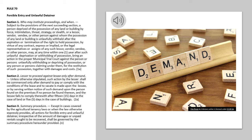Section 3. Summary Procedure. Except in cases covered by the Agricultural Tenancy Laws or when the law otherwise expressly provides, all actions for forcible entry and unlawful detainer, irrespective of the amount of damages or unpaid rentals sought to be recovered, shall be governed by the summary procedure hereunder provided.